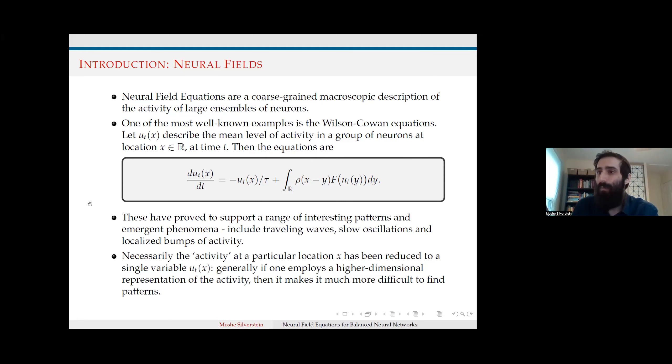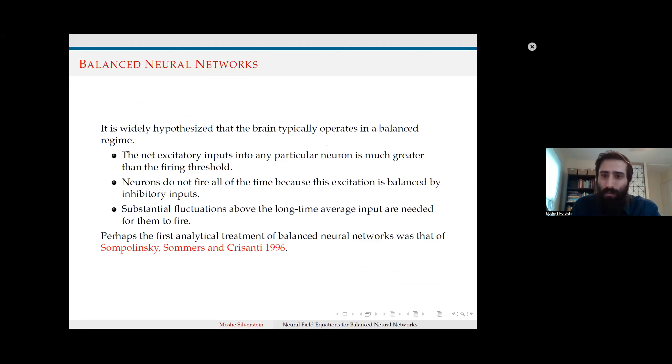It has been proposed that observations such as temporal variability in neural networks can result from models that approximate a balance state between excitatory and inhibitory inputs. Characteristics of such models include net excitation much greater than the firing threshold balanced by inhibitory inputs, and require substantial fluctuations above the long-time mean to fire. Such a model was first successfully explored by Sompolinsky, Sommers, and Crisanti in 1996.